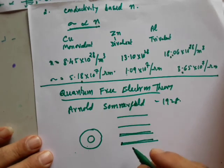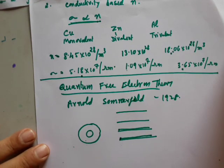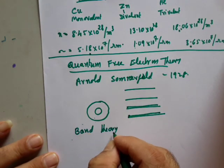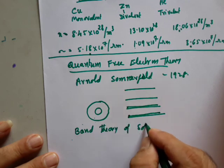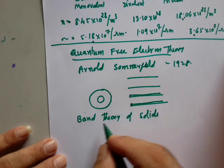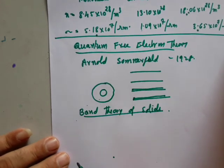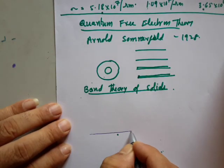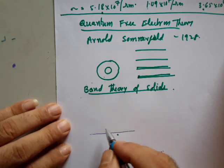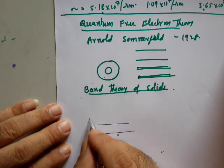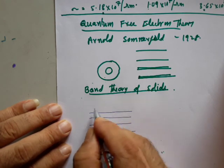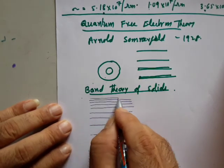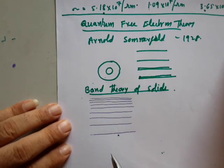To understand how conductivity takes place based on the quantum free electron theory, we require to understand the band theory of solids, which you already learnt. What does band theory tell us? An atom has a lowest energy state, then a first excited state, second, third, fourth excited state — large numbers of energy states. As you go up, the energy states become closer and closer. This is for a single atom.